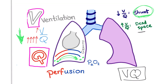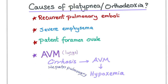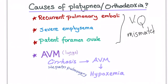The physician who first described this condition noticed it in a coal miner with severe emphysema who had trouble breathing while sitting up — i.e., platypnea-orthodeoxia. The causes of platypnea-orthodeoxia include recurrent pulmonary emboli, severe emphysema, and patent foramen ovale — all of which cause ventilation-perfusion mismatch. Anything that leads to arteriovenous malformations in the lungs, not systemically, can also cause it — for example, cirrhosis.